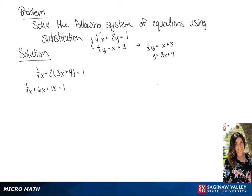We're going to combine the x values and subtract 18 from both sides. So we get 25 over 4x equals negative 17.